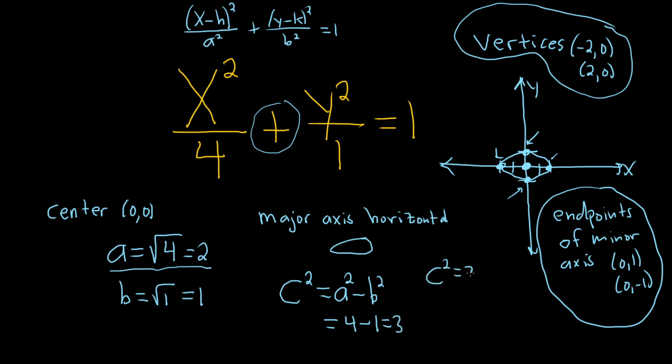So we have c squared equal to 3. Take the square root. We get c equals plus or minus the square root of 3. And the key is that the foci lie on the major axis. And they're a distance of c in each direction from the center. So one of them will be over here and one of them will be over here. These yellow dots would be the foci. So those yellow dots are a distance of square root of 3 from the center.